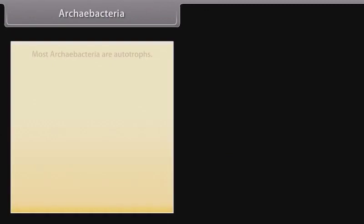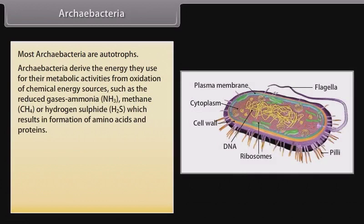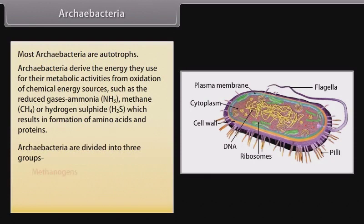Archibacteria: most archibacteria are autotrophs. They derive energy for their metabolic activities from oxidation of chemical energy sources such as the reduced gases ammonia (NH3), methane (CH4), or hydrogen sulfide (H2S), which results in formation of amino acids and proteins. Archibacteria are divided into three groups: methanogens, thermo-acidophiles, and halophiles.